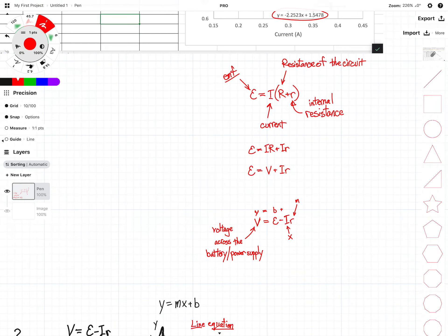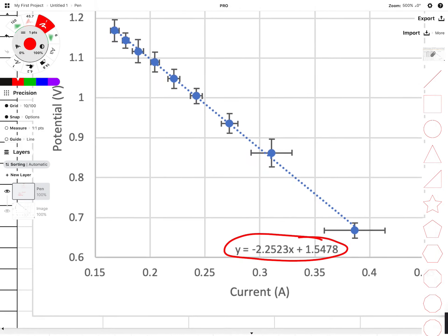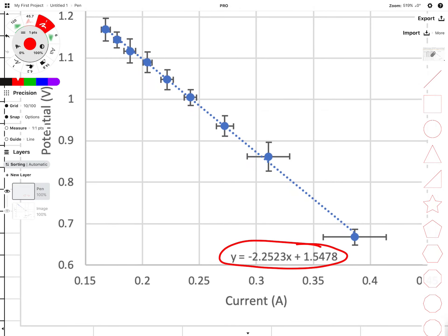And that means we can pull our internal resistance from this graph. It is going to be the slope of the graph.